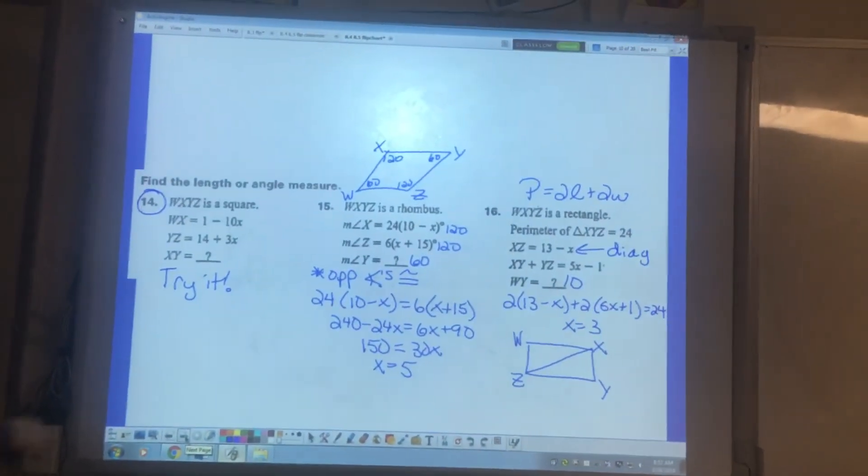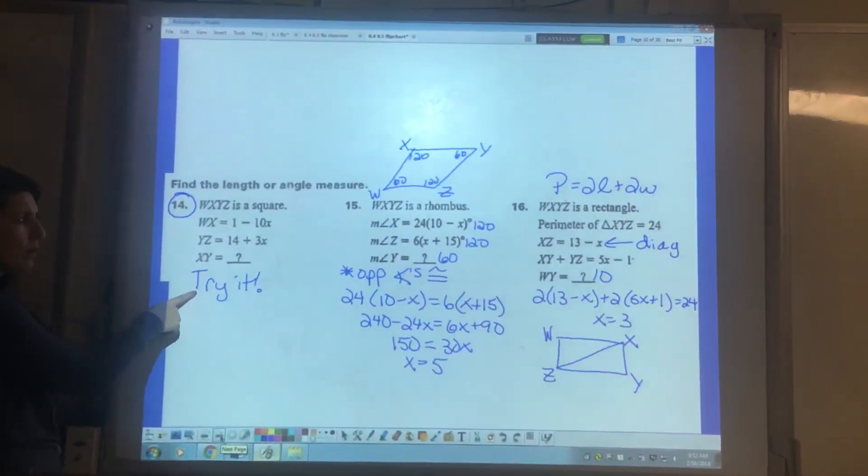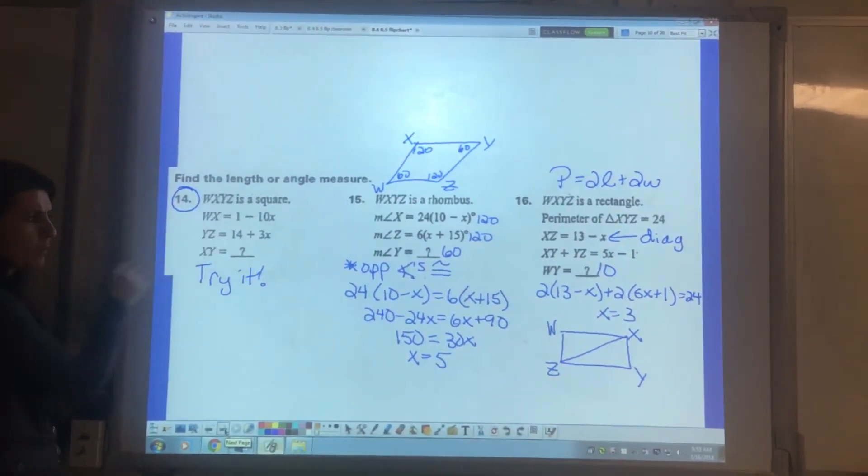Find the length of the angle measure. This one should be a pretty easy one for you to try. Remember your square characteristics to help you set up your equation properly.